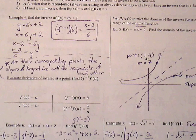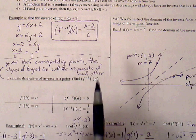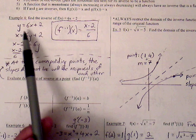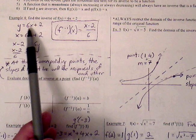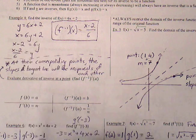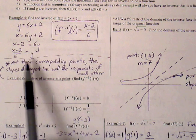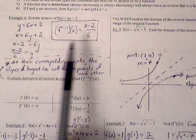Example 4: find the inverse of y equals 6x plus 2. The steps we take are to switch x and y, giving us x equals 6y plus 2. Then solve for y — subtract 2 from both sides and divide by 6. So the inverse function is x minus 2 over 6.